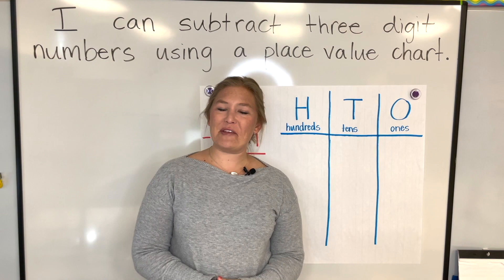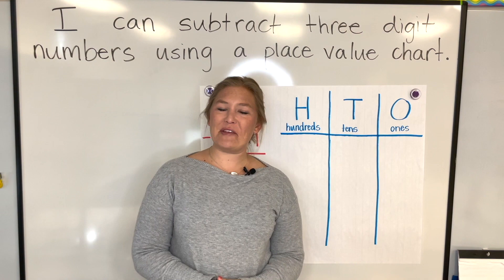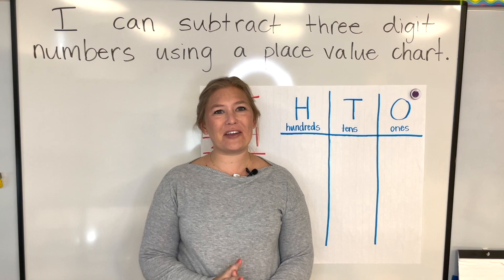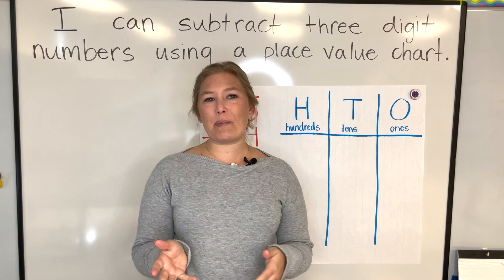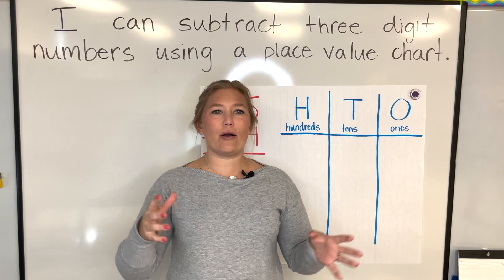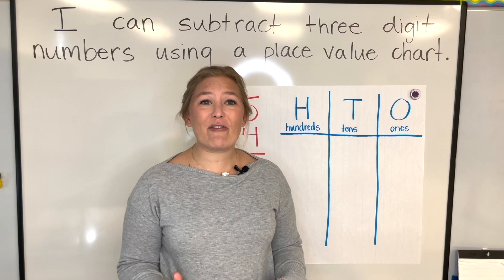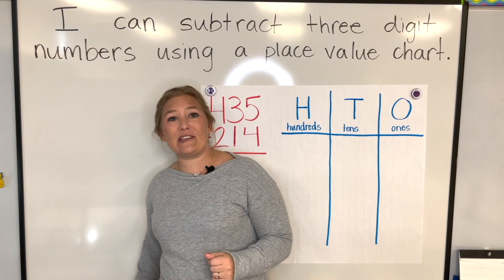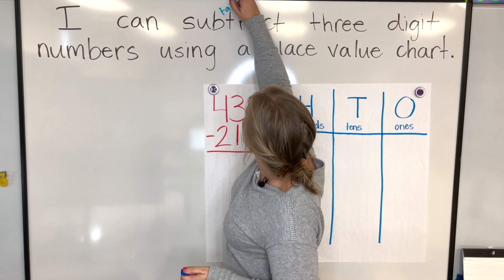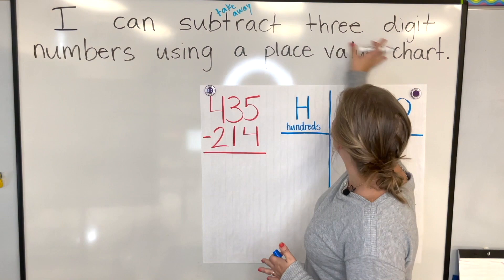Hello, my name is Mrs. Overish, and this is Math Mania for first and second graders. I'm so happy you're here today. Let's learn something new in math. Today we're going to be talking about subtracting three-digit numbers using a place value chart. All you need is a piece of paper and a pencil — or a pen, marker, or crayon, whatever you have to write with at home. Our I can statement today says: I can subtract three-digit numbers using a place value chart. Using a place value chart really shows us the value of each digit in a number, so we'll be able to break apart the number before we subtract.